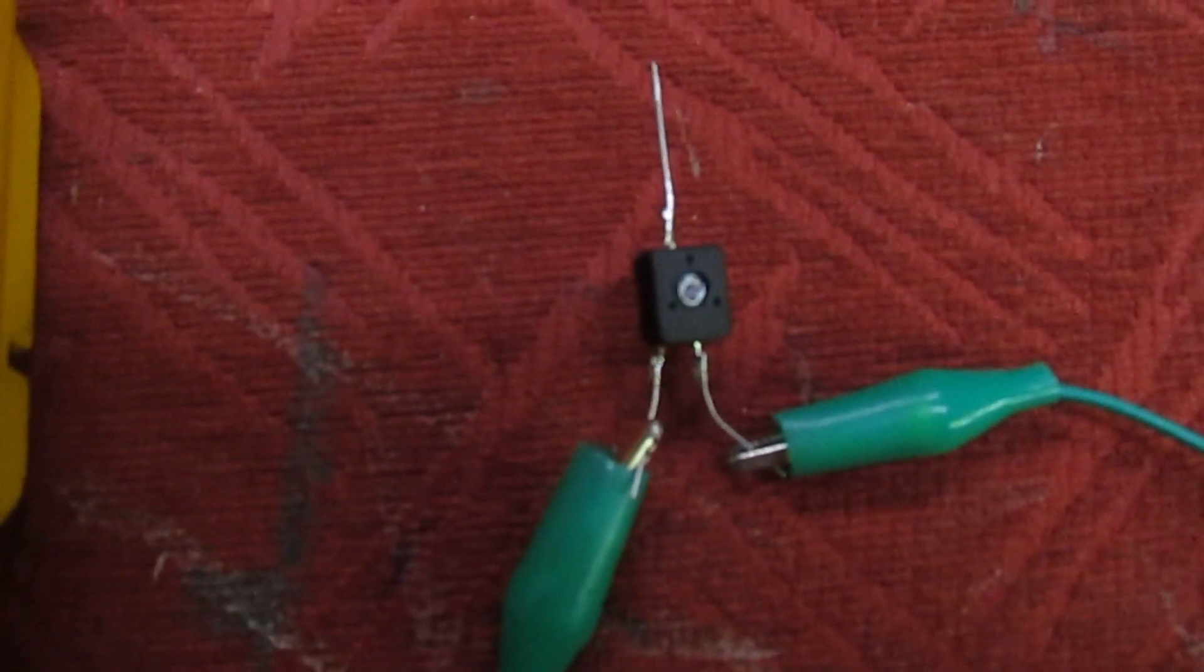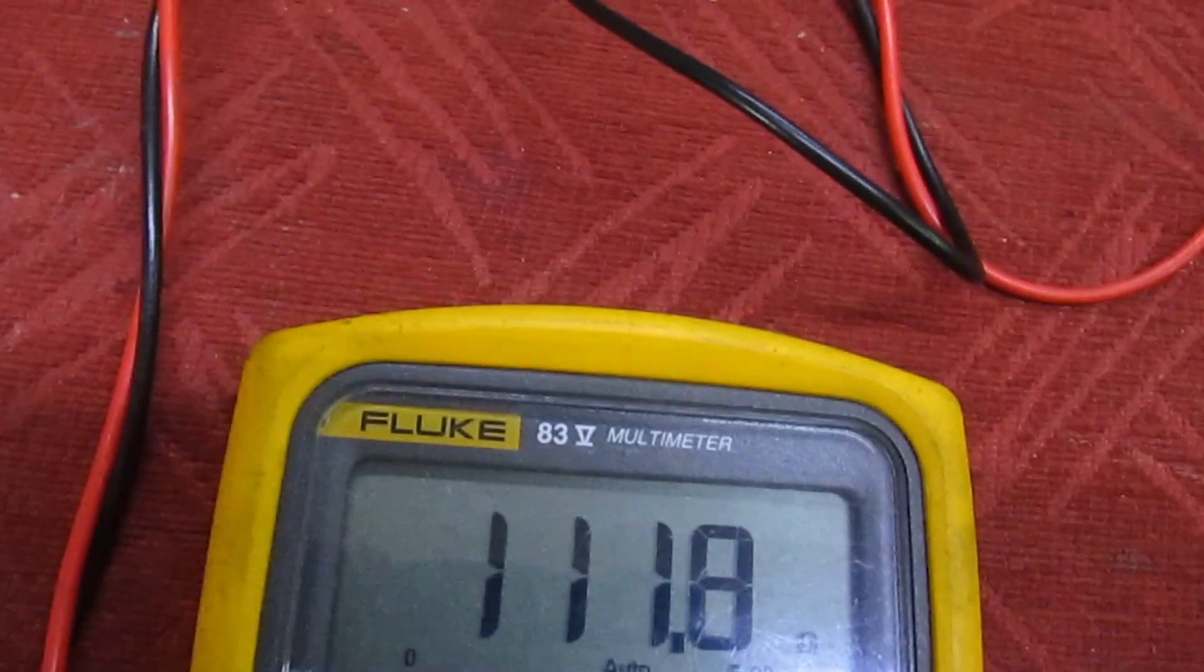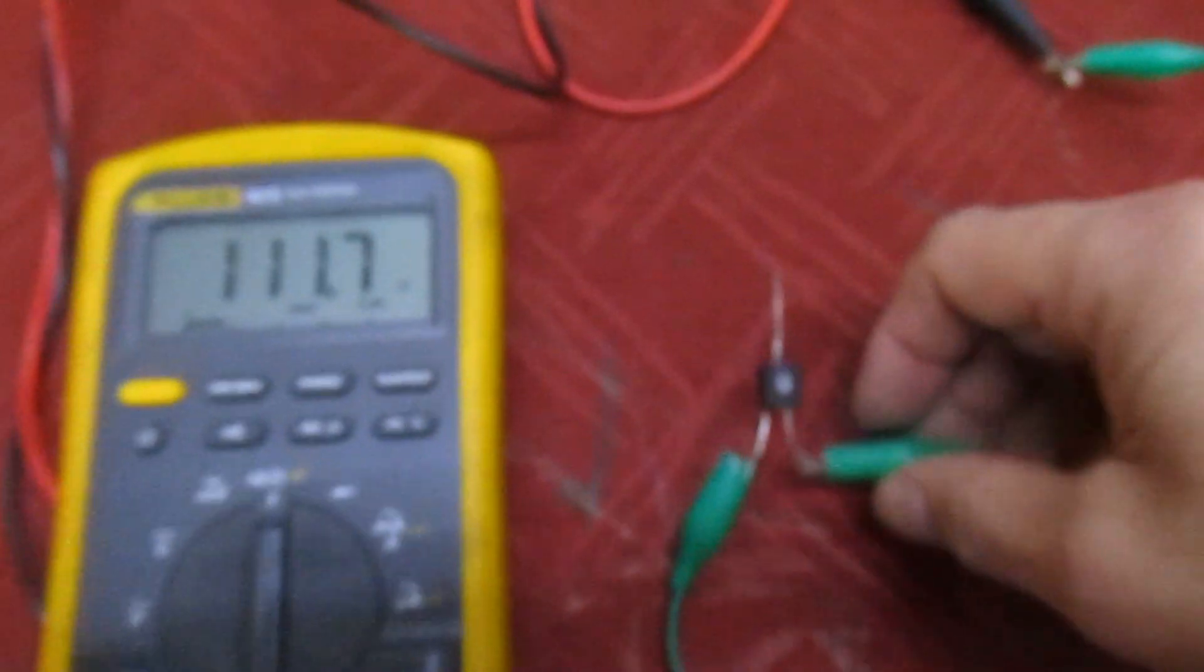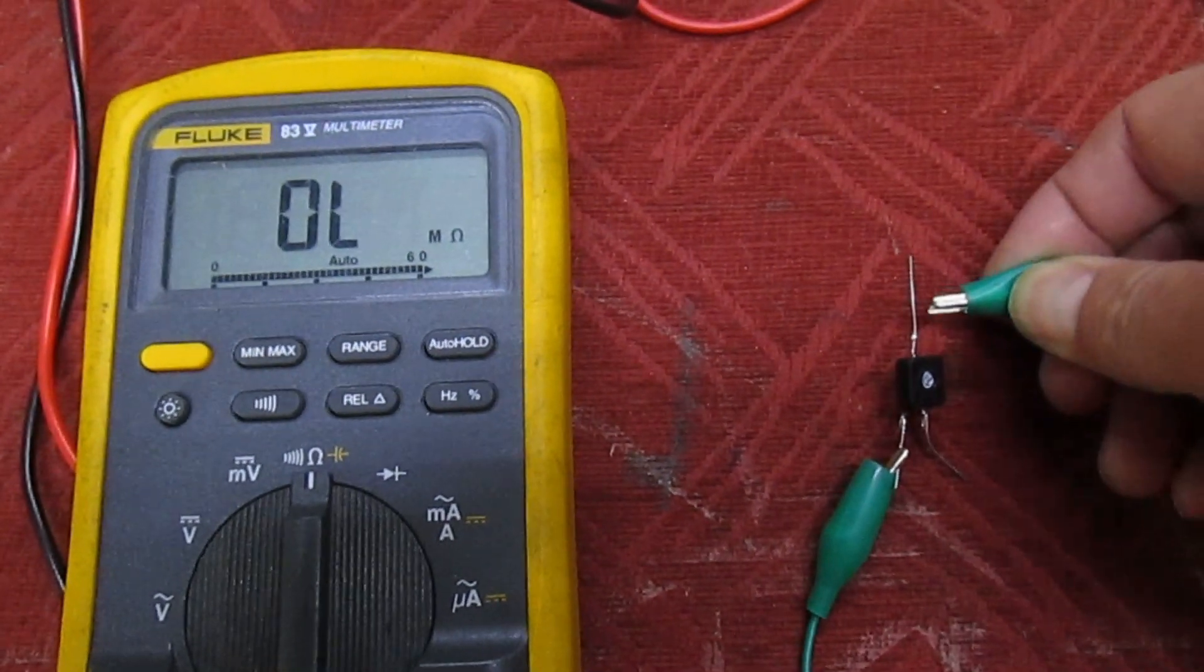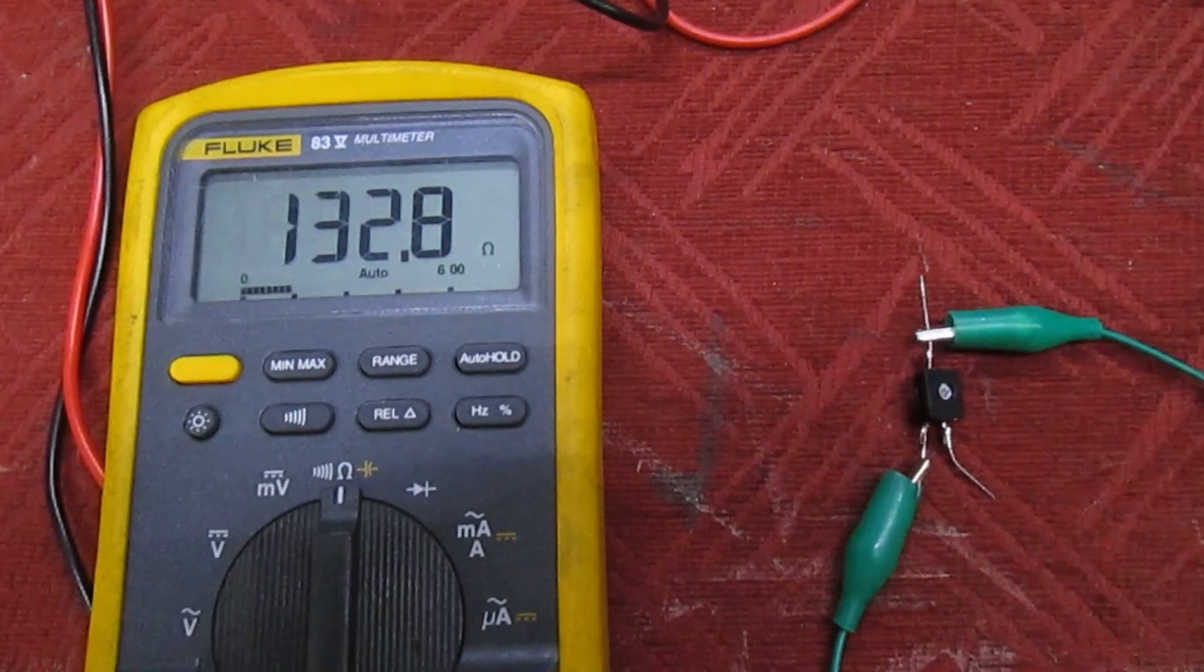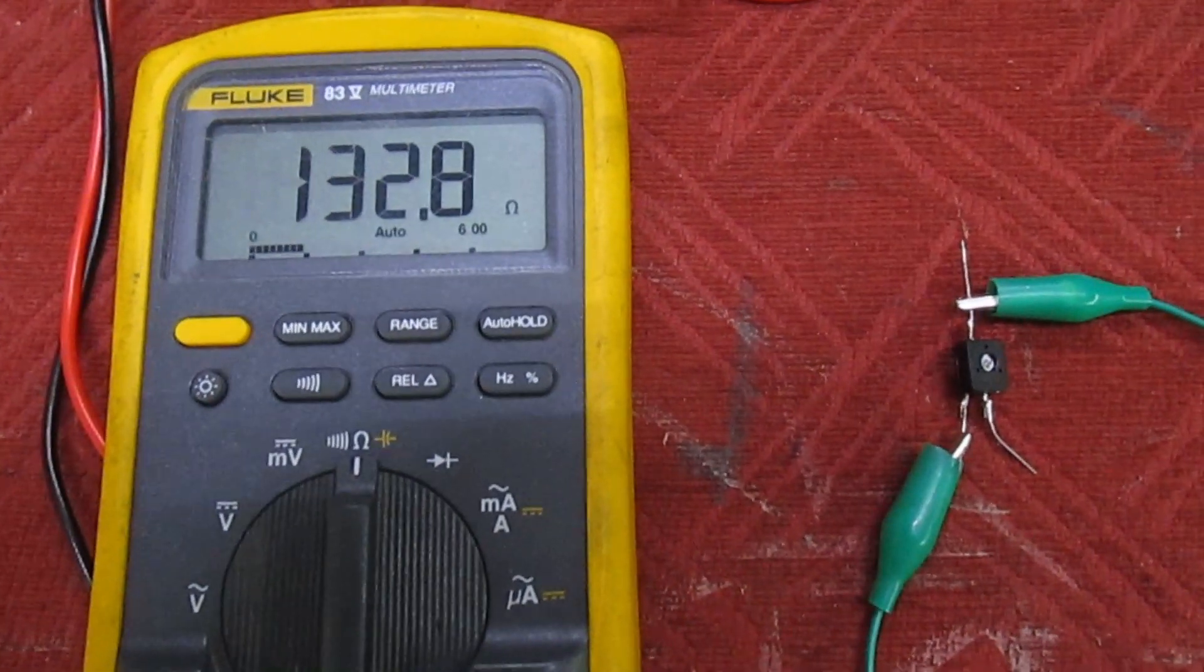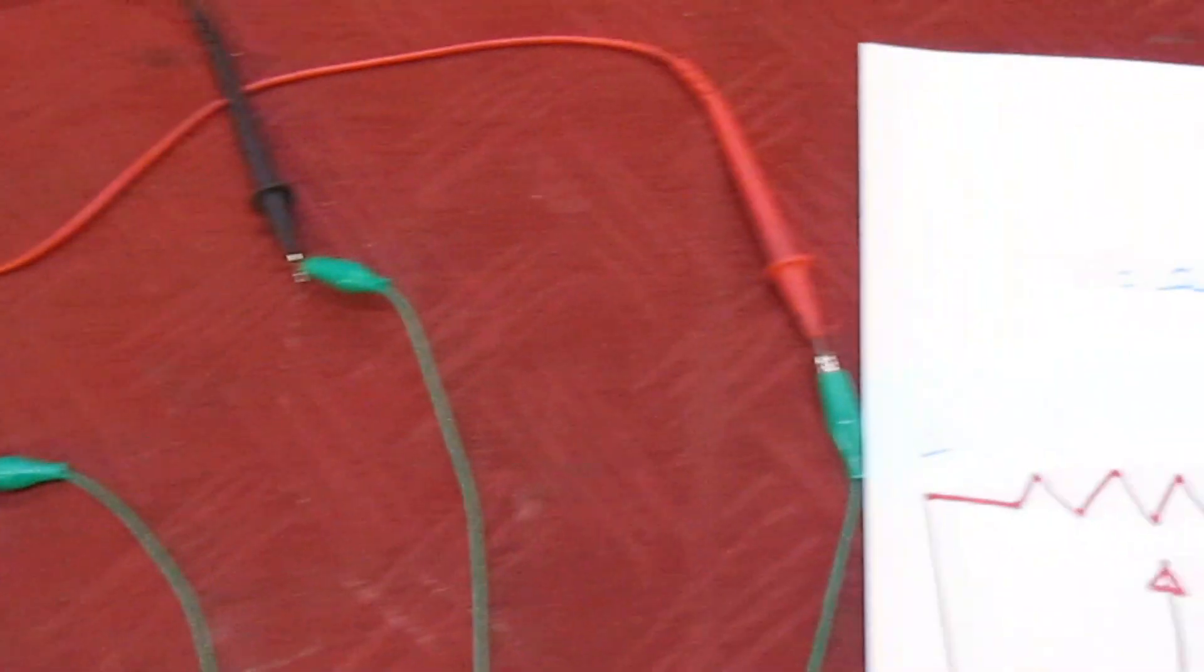That's the end to end, that should be 100 and it's just reading over. Now let's take this off here and put it onto the middle. Straight away we've got a reading of 132 ohms, so let's write that down.